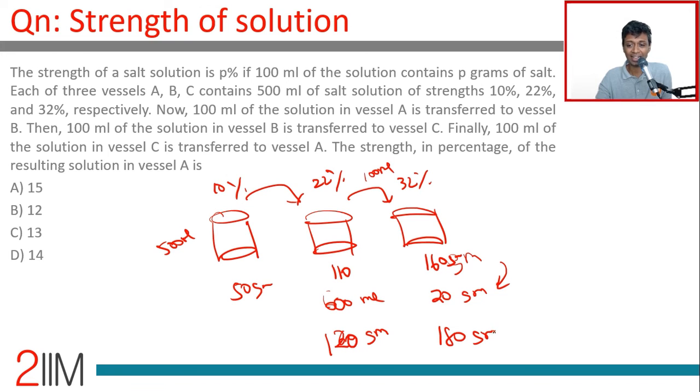From this, 100 ml is transferred back to A, and one-sixth of this, or 30 grams, get added back. So our solution A had 50 grams, we lost 10 grams because that's what we transferred to B.